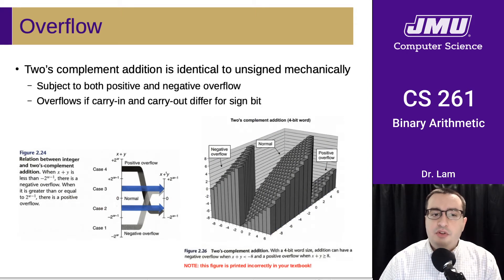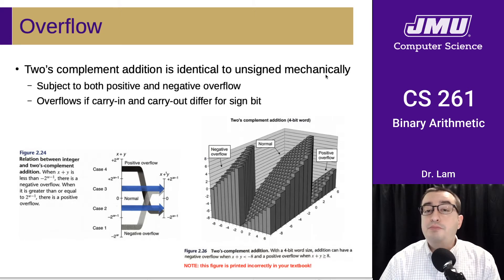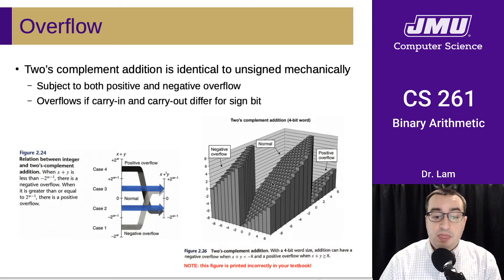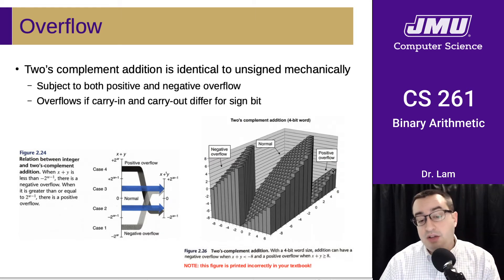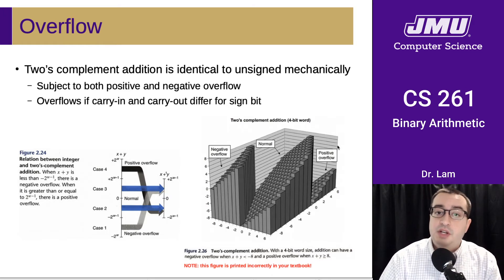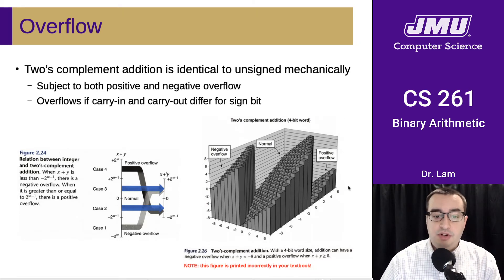If we think about this with respect to two's complement, we actually have the capability for overflow to happen on both ends of the number line — it is subject to both positive and negative overflow. These are the results for which the answer is correct, but we also have negative overflow and positive overflow. Negative overflow is when we were supposed to get a negative number but got a positive one. Positive overflow is when we were supposed to have a positive number but overflowed and now have a negative number. It's important to note that in some editions of the textbook, this diagram is printed incorrectly — the correct one is from the textbook's website.